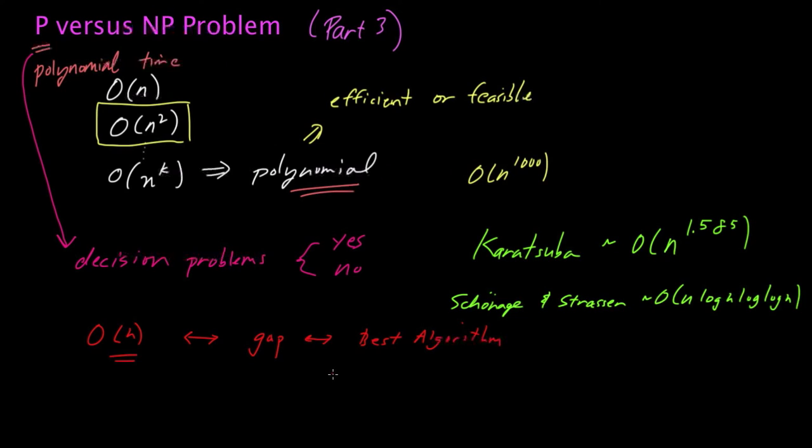Now, in either case, this problem with multiplication is actually a very easy problem for a computer. You can take two huge numbers. You can take numbers that are 1,000 digits each, and a computer can multiply them together in a split second and produce an answer.